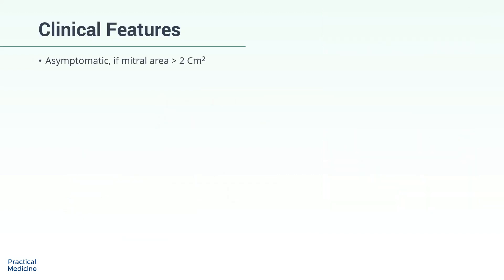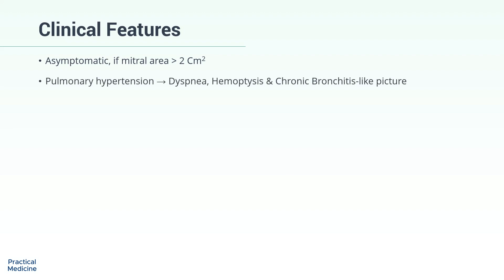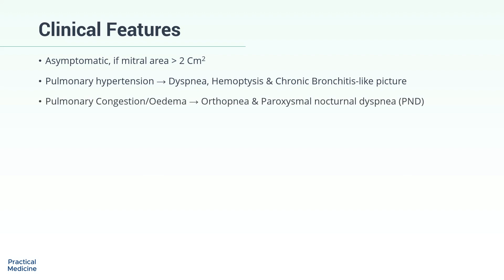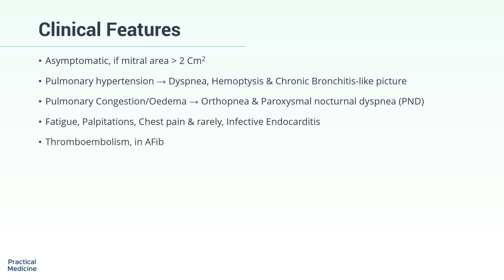Clinical Features: Patients are usually asymptomatic until the mitral valve area is reduced to approximately 2 square centimeters. Pulmonary hypertension causes dyspnea, hemoptysis, and a chronic bronchitis-like picture. Orthopnea and paroxysmal nocturnal dyspnea are also present if there is pulmonary congestion. There may also be fatigue, palpitations, chest pain, and rarely infective endocarditis. Thromboembolism is a complication which can occur in patients who have developed AFib due to mitral stenosis.